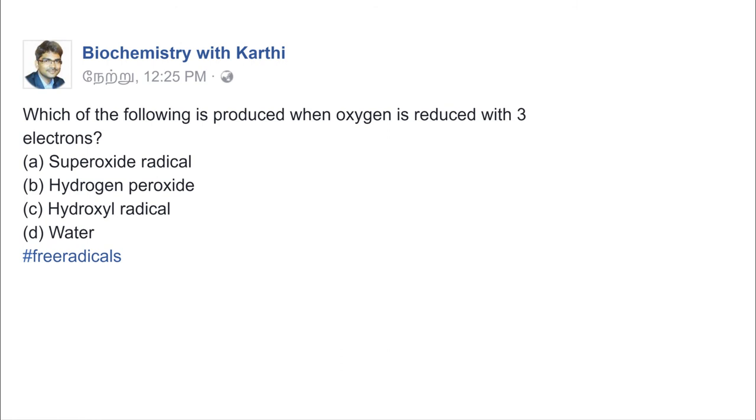Which of the following is produced when oxygen is reduced with three electrons? Superoxide radical, hydrogen peroxide, hydroxyl radical, or water. First of all, we should know what is reduction. Loss of electron is oxidation and gain of electron is reduction.